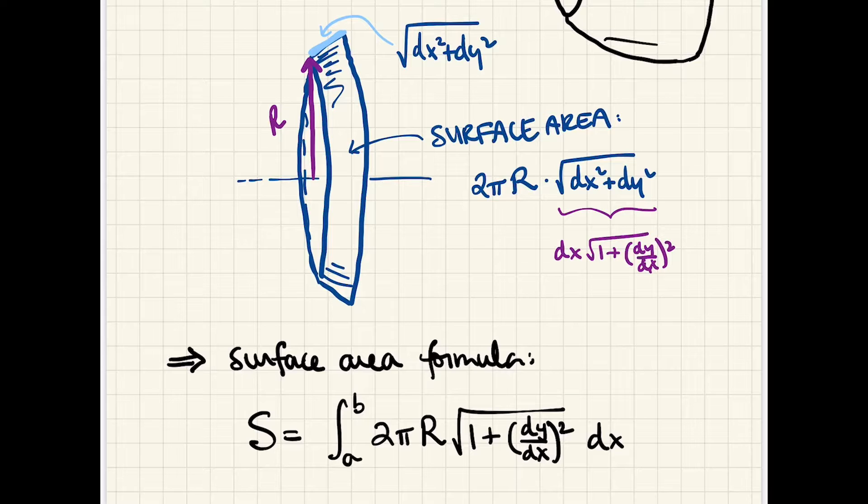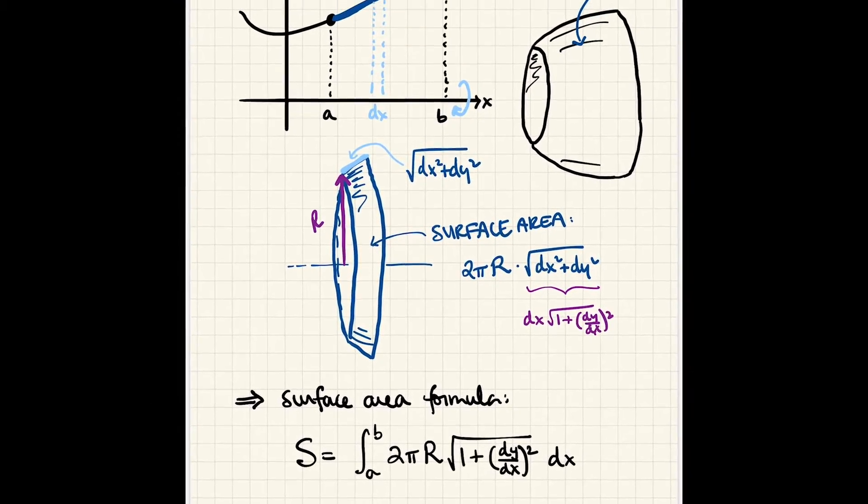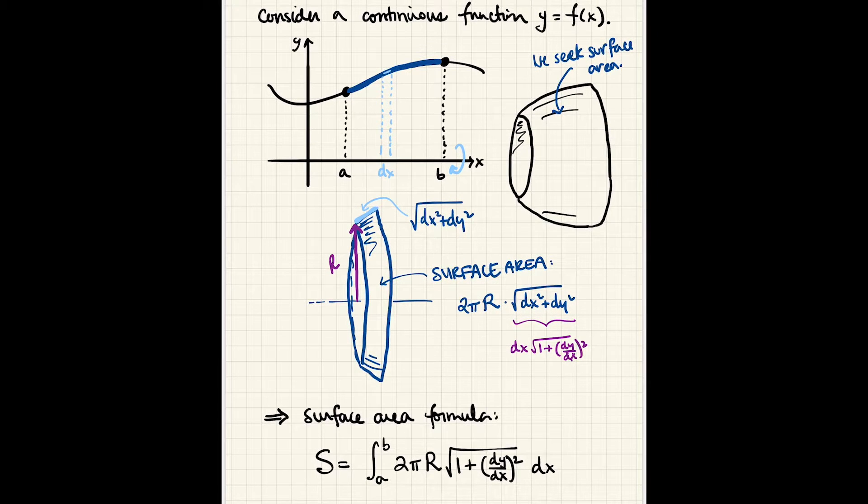So now, for the exercises that we're going to see, we're only ever going to be rotating around the x or the y-axis. So our radius, capital R, is always just going to be with respect to the x or the y-axis, which means itself is going to just be x or y.